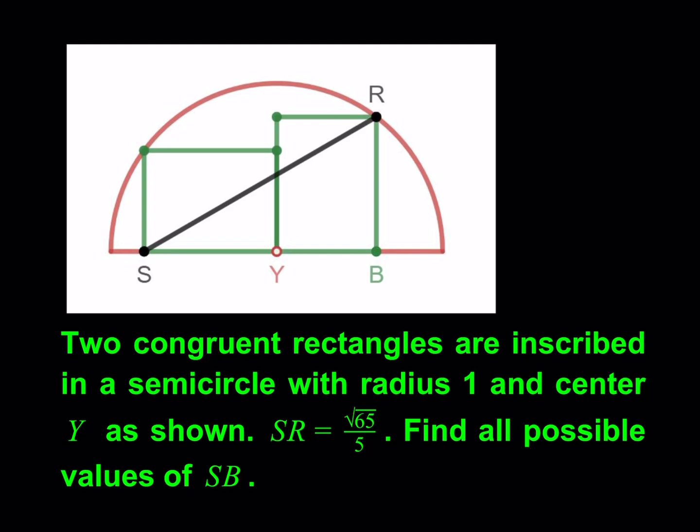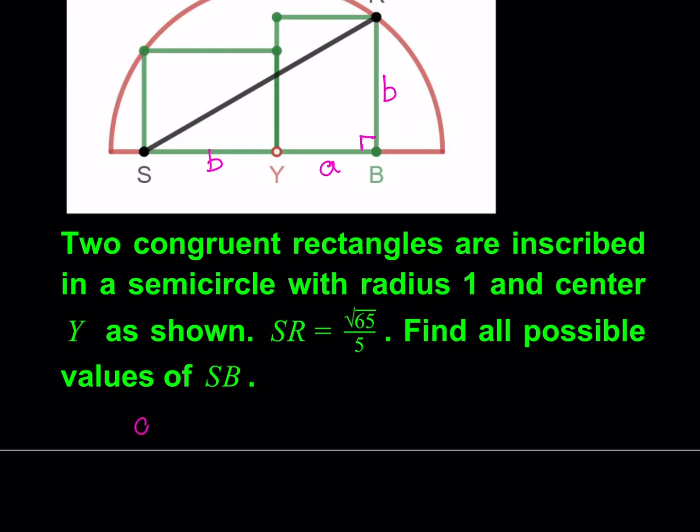Two congruent rectangles are inscribed in a semicircle with radius 1 and center Y as shown. So let's go ahead and start by naming this side length a and this one b. From here we are given the length of SR so I can use the Pythagorean theorem. I can write this as (a+b)² + b² = SR² which is 65/25, and I can write it as 13/5.